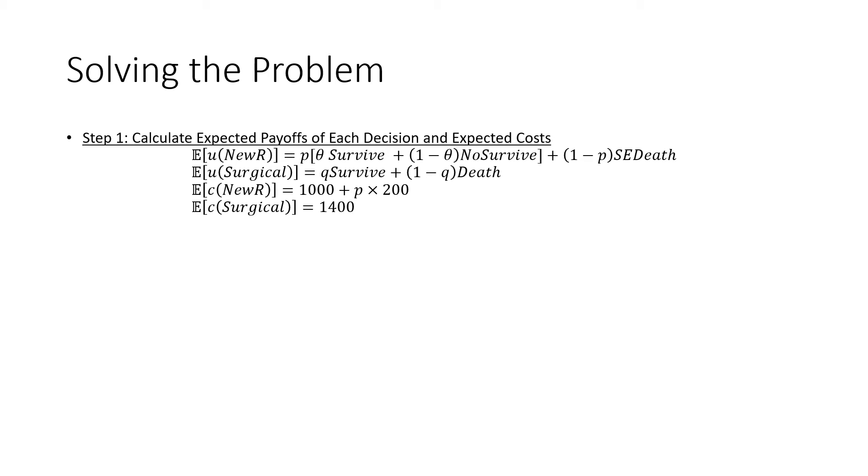We do that for our new radiation therapy, our surgical option, and we do the same thing for costs. But with our costs for our new surgical option, we're going to add the initial cost and we're going to add this node payoff, but we're going to discount it by the probability of that happening. And we're going to have our surgical option, which is just a direct cost.